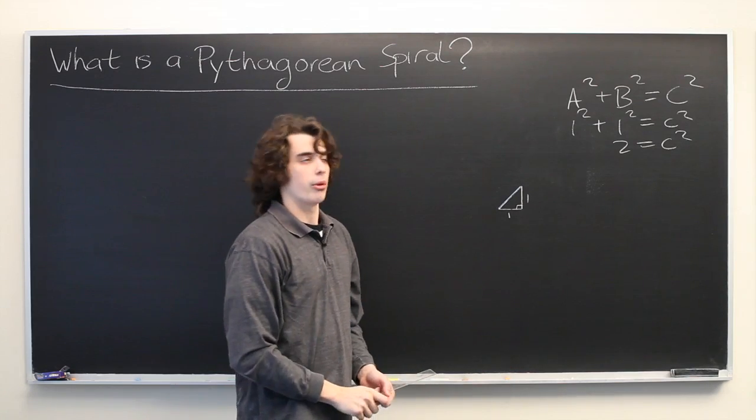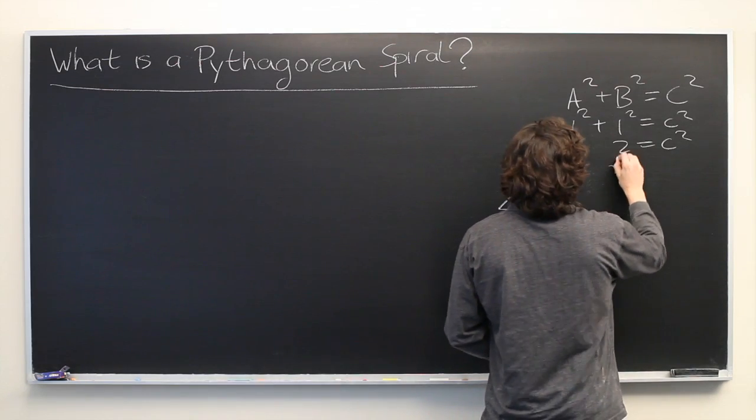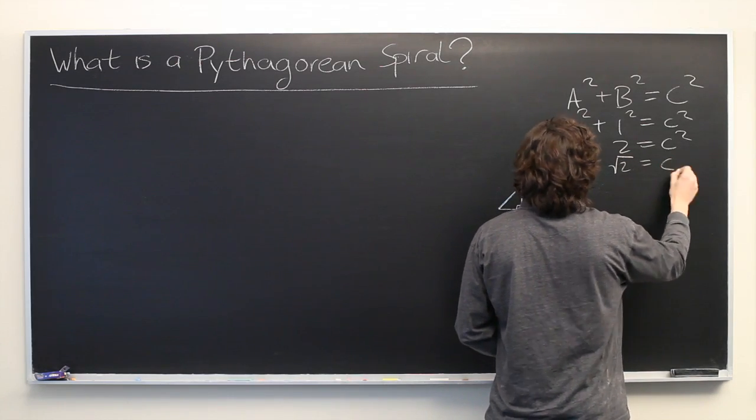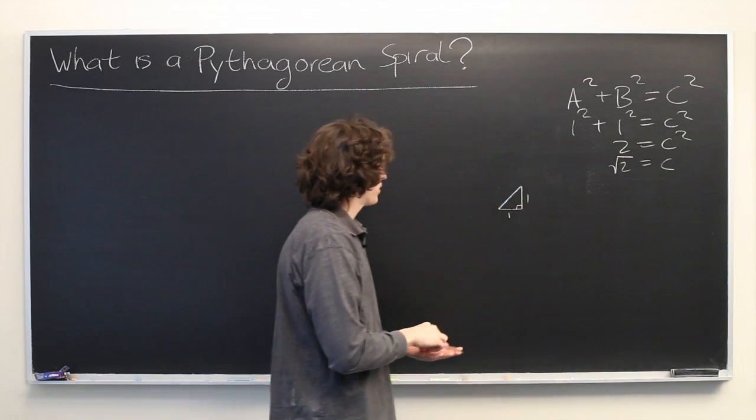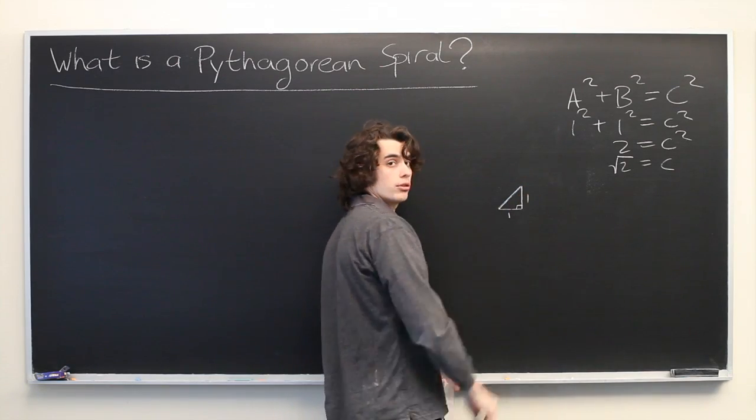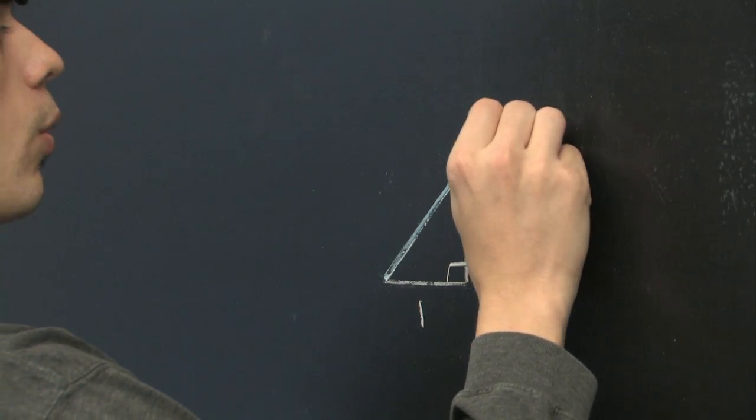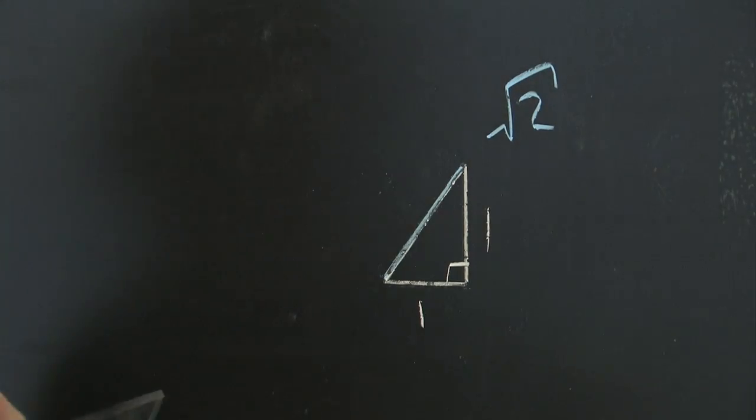We simply take the square root of both sides. So what that tells us is that the length of this hypotenuse is equal to the square root of two times whatever unit we're using.